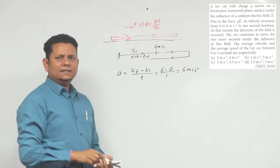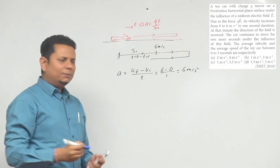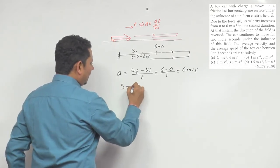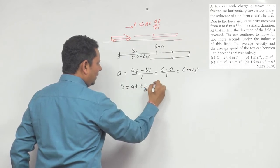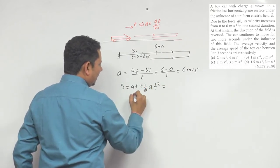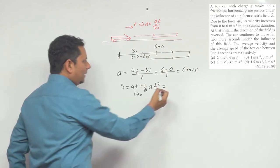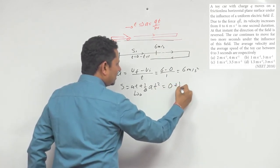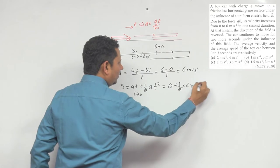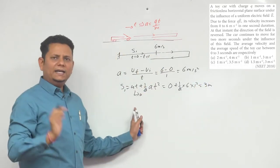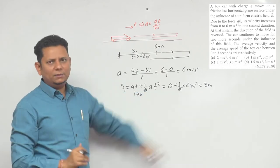If we use the second equation of motion, we can say that S equals ut plus half a t squared. Initial velocity was 0, so displacement will be 0 plus half multiplied by 6 multiplied by 1 squared, which equals 3 meters. So S1, the displacement in the first second, is 3 meters.